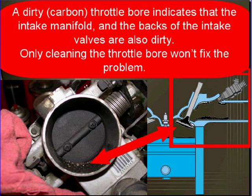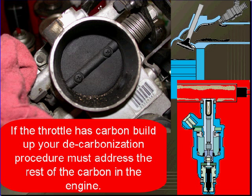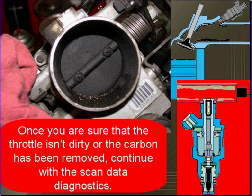A dirty throttle bore indicates that the intake manifold and the back of the intake valves are dirty also. Only cleaning the throttle bore won't fix this problem. Carbon will also build up in the fuel rail and the injectors. If there is carbon buildup on the throttle, you need to decarbonize the entire engine. The decarbonization procedure must address all the carbon buildup in the engine. Once you are sure that the throttle isn't dirty or the carbon has been removed, continue with scan data diagnostics.